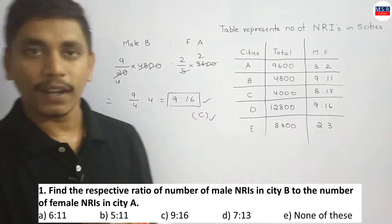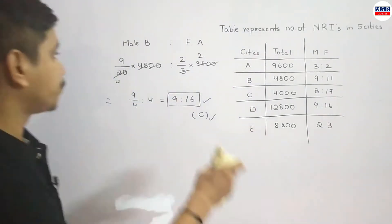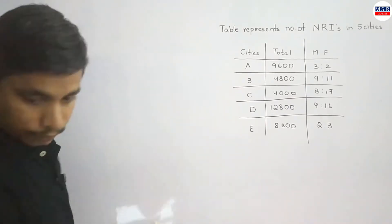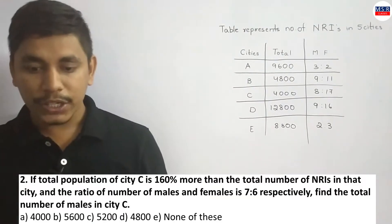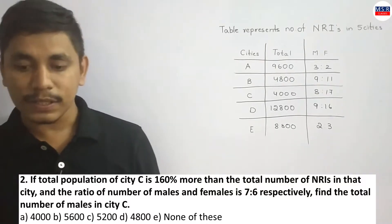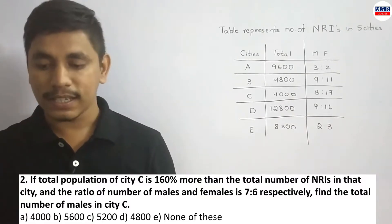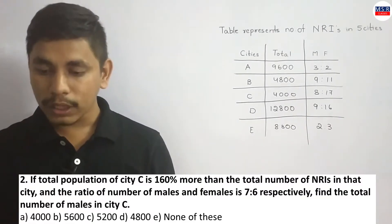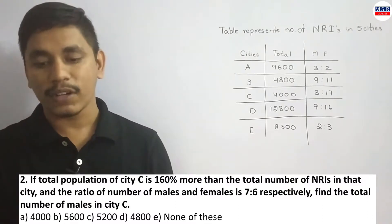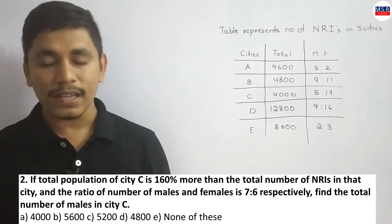Option C is your answer. Next question: If the total population of city C is 160% more than the total number of NRIs in the city, and the ratio of number of males to females is 7 is to 6 respectively, find the total number of males in the city.